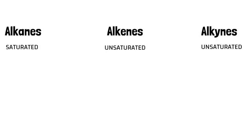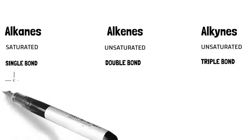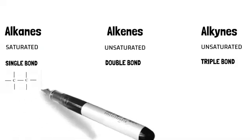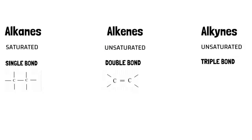When we say something is saturated, we mean it's got a single bond between carbon atoms. When we say it's unsaturated, we mean it's got double bonds between carbon atoms, or triple bonds between carbon atoms like in the case of alkynes. So that's how you'd identify alkanes — a single bond; alkenes — a double bond between carbon atoms; and alkynes — a triple bond. These are the functional groups that represent alkanes, alkenes, and alkynes.